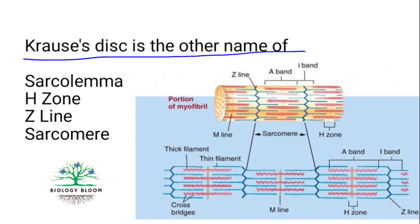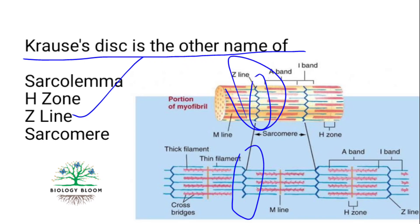Cross disc is the other name of which structure? — Sarcolemma, H zone, or Z line? It is the Z line. Z line also has other names: Z disc, cross membrane, Doobies line. These are all names for the Z line found in muscle fibers.